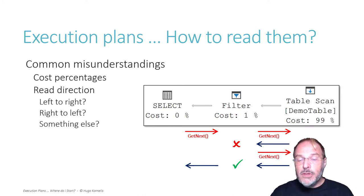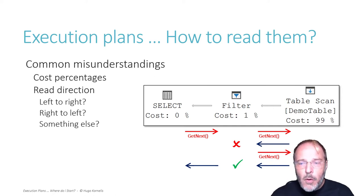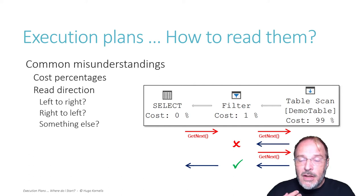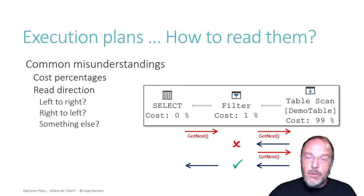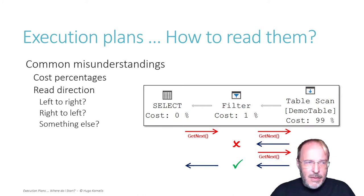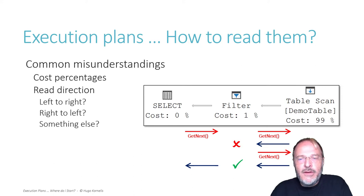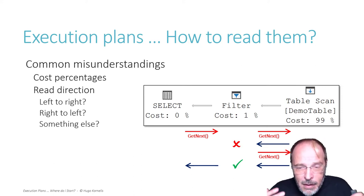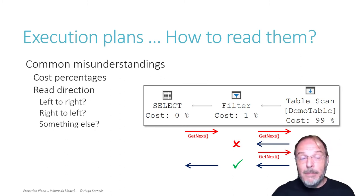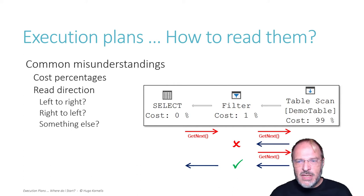On the screen you see red arrows, left to right, marked getNext - those represent the flow of control, the order in which operators call other operators. You also see blue arrows, right to left, with no text - those represent the flow of data, following the rows. If you are looking at complex execution plans and it's hard to understand what's going on, similar to how TV detectives follow the money, we as execution plan detectives need to follow the data. Very often following the data, which does imply reading right to left, is the easiest way to understand how an execution plan works and how everything ties together. But not always.